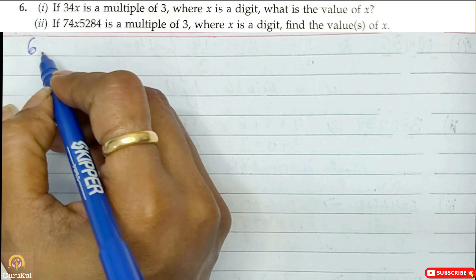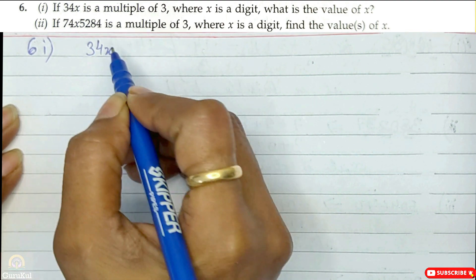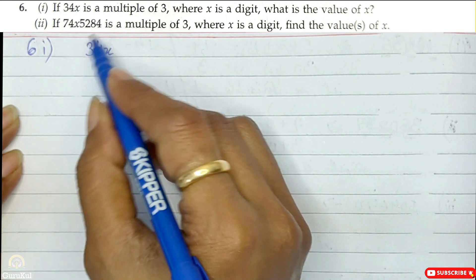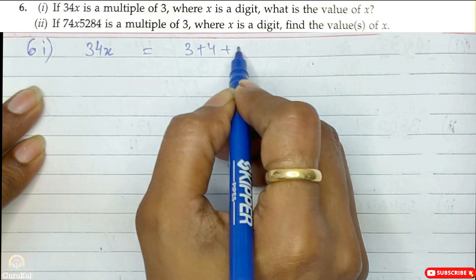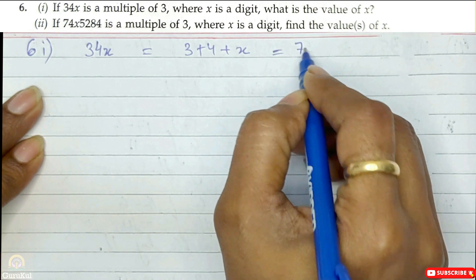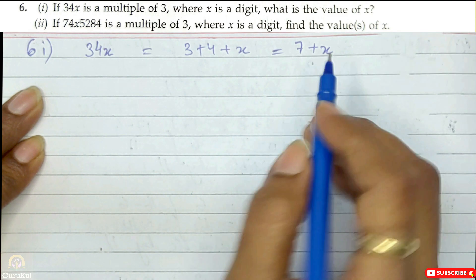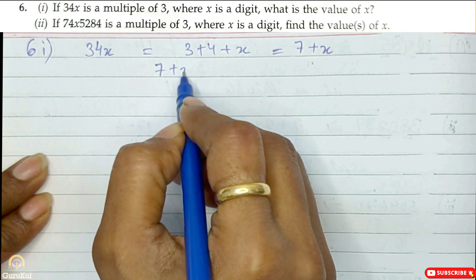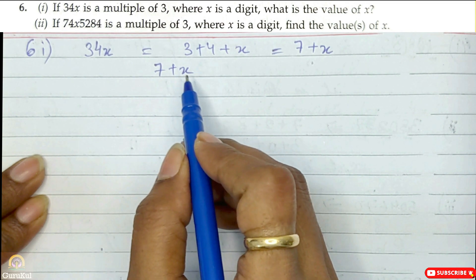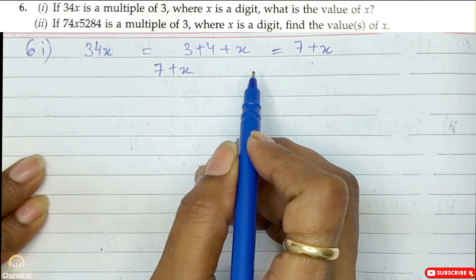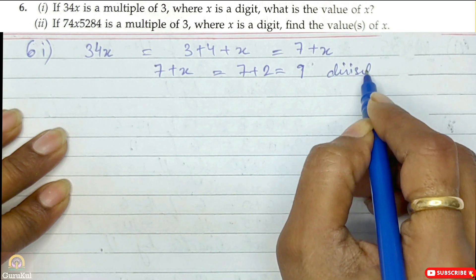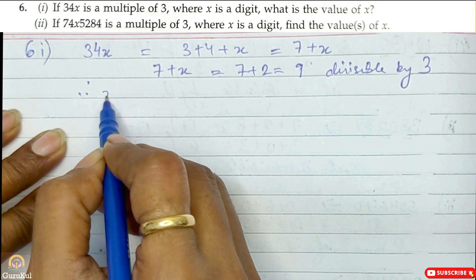Now question number 6, first part: if 34x is a multiple of 3, we need to find the value of x. For divisibility by 3, the sum of all digits must be divisible by 3. So 3 plus 4 plus x equals 7 plus x. We need 7 plus x to be divisible by 3. So 7 plus 2 is 9, and 9 is divisible by 3. Therefore x equals 2.